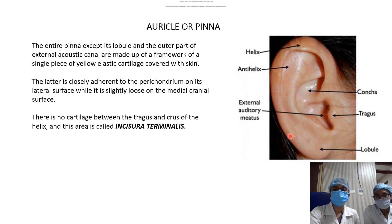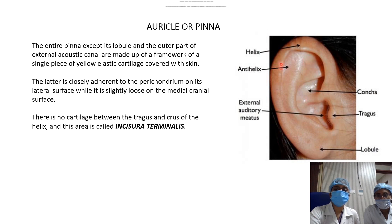The auricle or pinna is made up of yellow elastic cartilage in a single piece, covered with skin. On the lateral surface, the skin is tightly adherent, but on the medial or cranial surface it is loosely adherent. There are various elevations and depressions on the pinna.